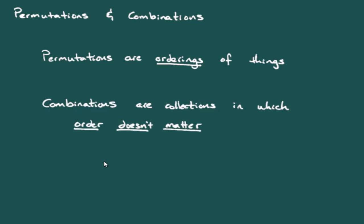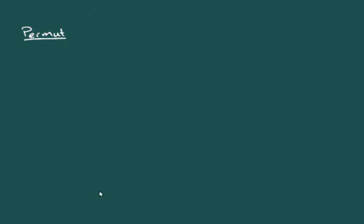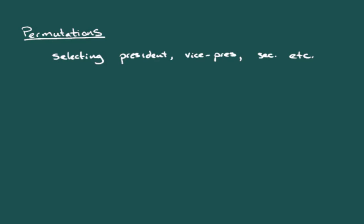Examples of permutations: suppose we are selecting individuals for president, vice president, and secretary. It matters which person has which position, so order matters. Another situation where order matters is the finishers in a race. A third example is phone numbers — the digits matter. If you rearrange the digits you get a different phone number, so order matters.